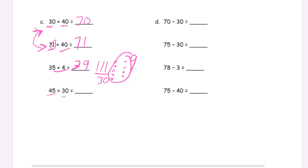Now we have 45 and 30. You're not adding any ones here because it's zero for the ones digit. You're just adding tens. So you've got 45, three more tens, 75. Now we're doing subtraction. Seven tens minus three tens is four tens. And four tens is 40.